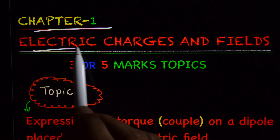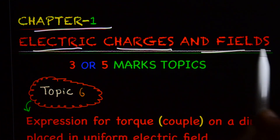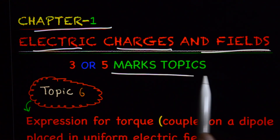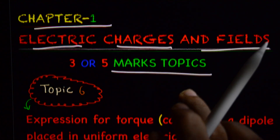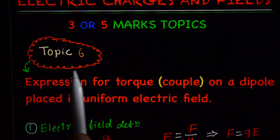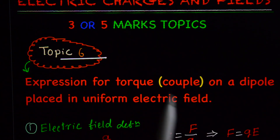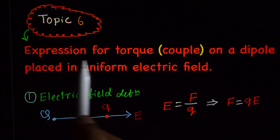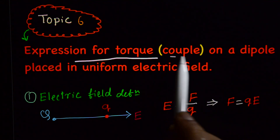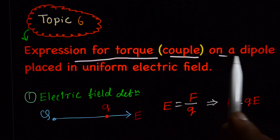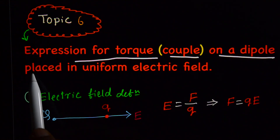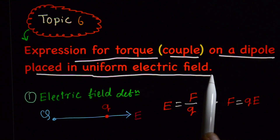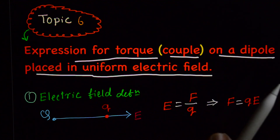Chapter 1: Electric Charges and Fields. We will now discuss the 6th topic from the 3 or 5 mark topics: Expression for torque or couple on a dipole placed in a uniform electric field.